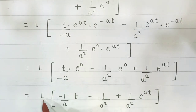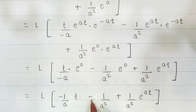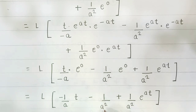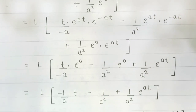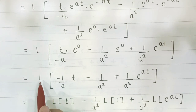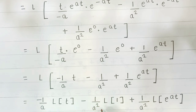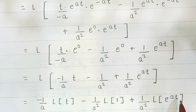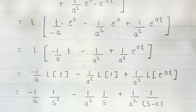Pulling scalars outside the Laplace operator: −(1/a)·Laplace(t) − (1/a²)·Laplace(1) + (1/a²)·Laplace(e^(at)). Substituting known results — Laplace(t) = 1/s², Laplace(1) = 1/s, Laplace(e^(at)) = 1/(s−a) — we get: −1/(a·s²) − 1/(a²·s) + 1/(a²·(s−a)).